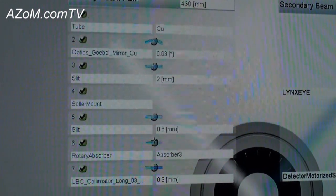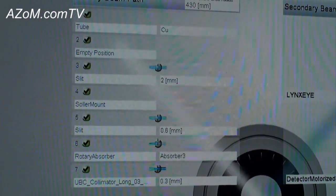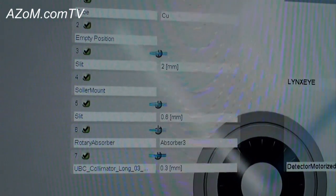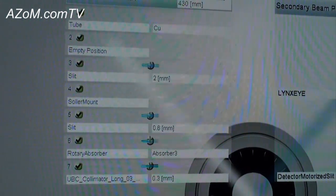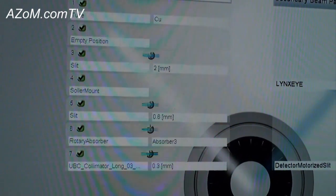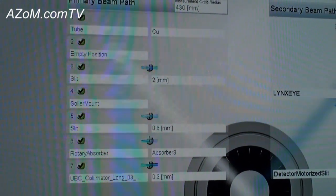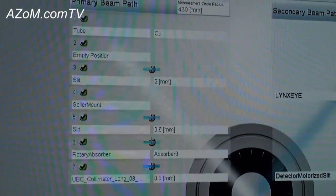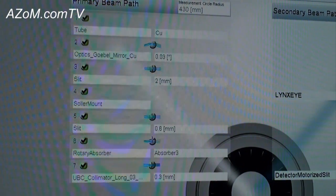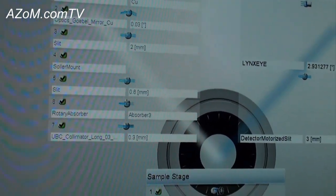I'll take that optic off one more time and you'll notice that that switches to an empty position. So the system knows now that that optic is no longer mounted. I go ahead and mount that back to the system and it recognizes, again, Göbel mirror with copper radiation.